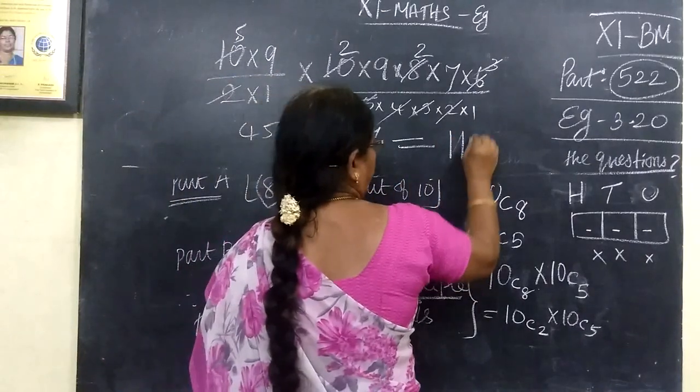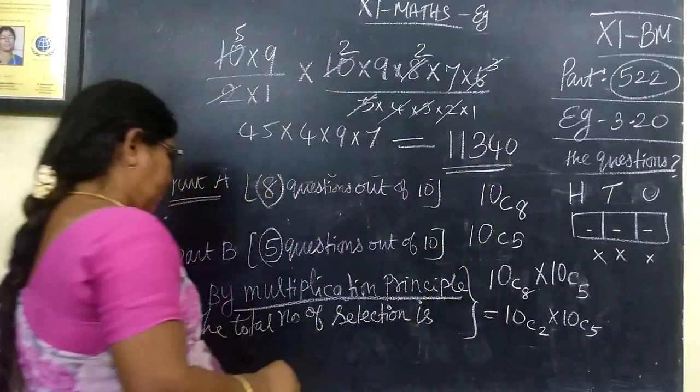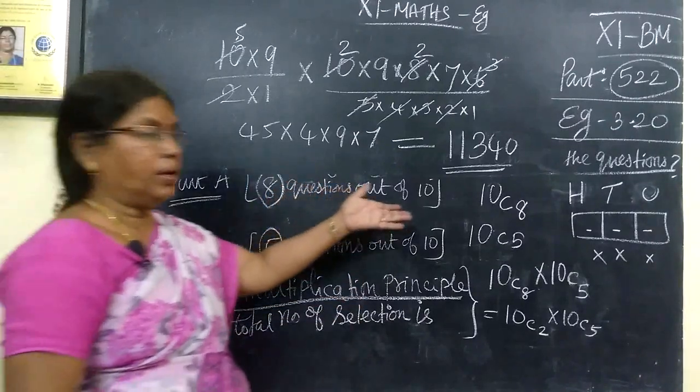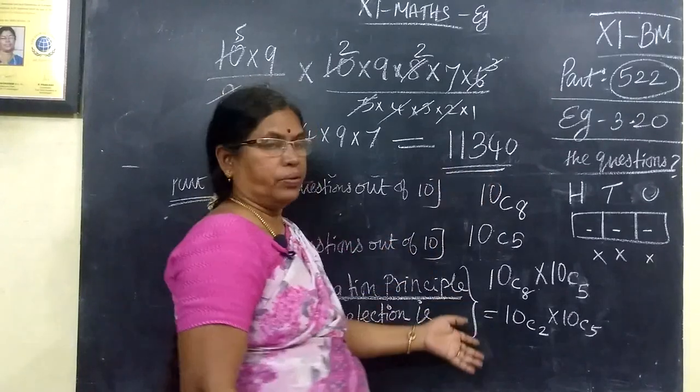Here the answer for this is 11340. So by multiplication theorem, the total number of selections.